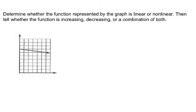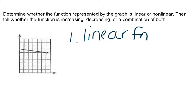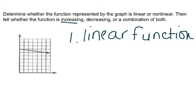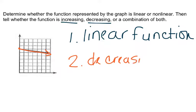Now we're back — let's talk about it. When I look at it, it's a straight line, so I know that this is a linear function with a linear relationship. The second question is, is it increasing or decreasing? I look, and it starts high on the left-hand side and goes down towards the bottom. So that means it is a decreasing relationship — it is a decreasing linear function.